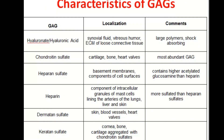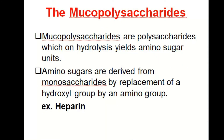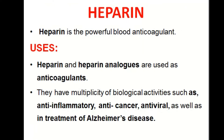Heparin is a well-known anticoagulant. Heparin sulfates contain amino sugars along with the polysaccharide molecule, including different monosaccharides and amino sugars. Importantly, heparin functions as an anticoagulant, anti-inflammatory, anti-cancer, and anti-viral agent, and it is also used in Alzheimer's disease treatment.